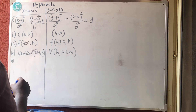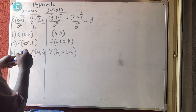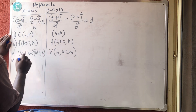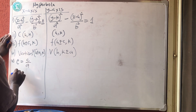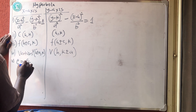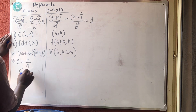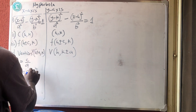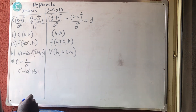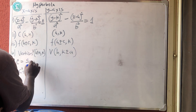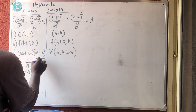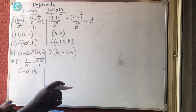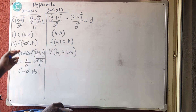The eccentricity e = c / a. Note that here c² = a² + b² — that's the key difference from ellipse, where it is a² minus b². This is very important. So eccentricity is the square root of (a² + b²) all over a. In ellipse the formula carries a minus, but in hyperbola it is plus.